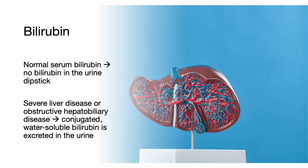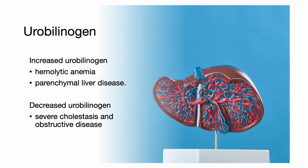If the serum bilirubin is normal, there should be no bilirubin on the urine dipstick. In patients with severe liver disease or obstructive hepatobiliary disease, conjugated water-soluble bilirubin is excreted in the urine. Gut bacteria produce urobilinogen through metabolism of bilirubin, which is then absorbed via portal circulation and excreted in urine. Increased urobilinogen is associated with hemolytic anemia or parenchymal liver disease, while decreased levels are seen in severe cholestasis and obstructive disease.